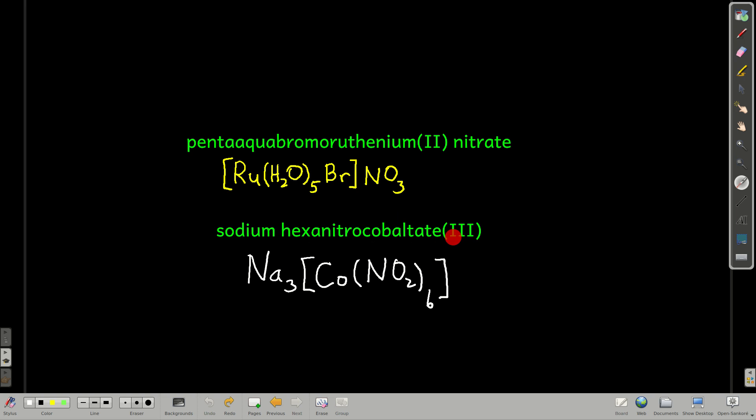Sodium hexanitrocobaltate(III), so sodium is first, hexanitro, six nitrites, each with a negative one, cobaltate(III), so there's cobalt with a three positive charge, six negatives here, that means there must be three sodiums each with a plus one charge to balance it out.